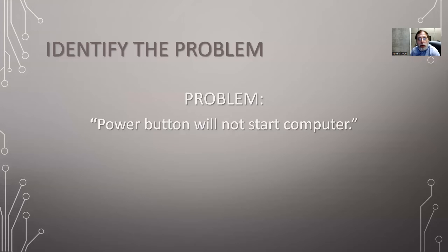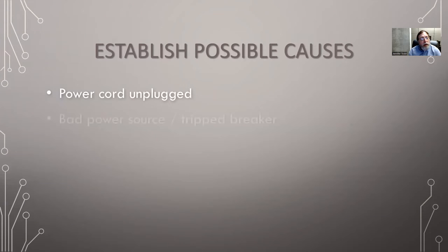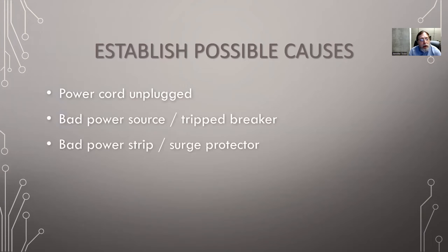Now we're going to go into a sample problem. We walk up, press the power button on the computer, and it doesn't come on. Probable causes: power cord unplugged, bad power source, outlet, or a tripped breaker in the building. If it's plugged into a power strip, has that power strip gone bad or possibly need to be reset?